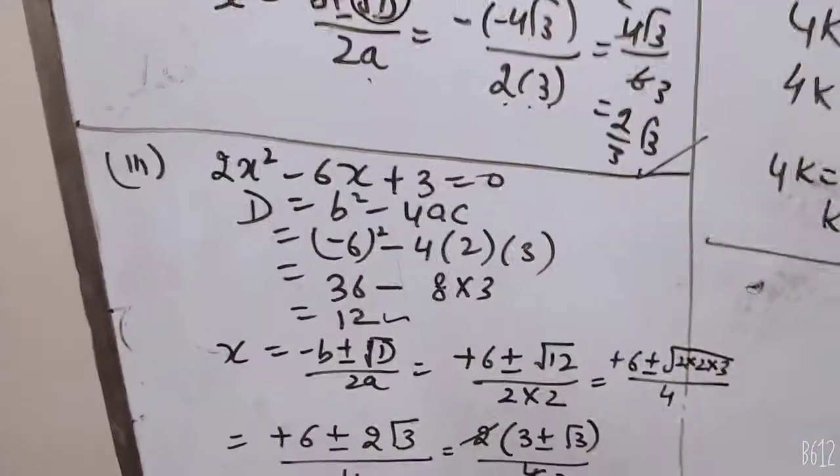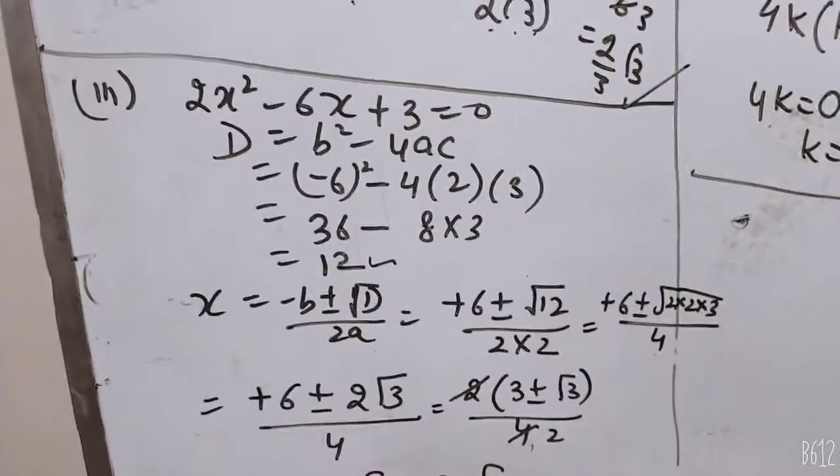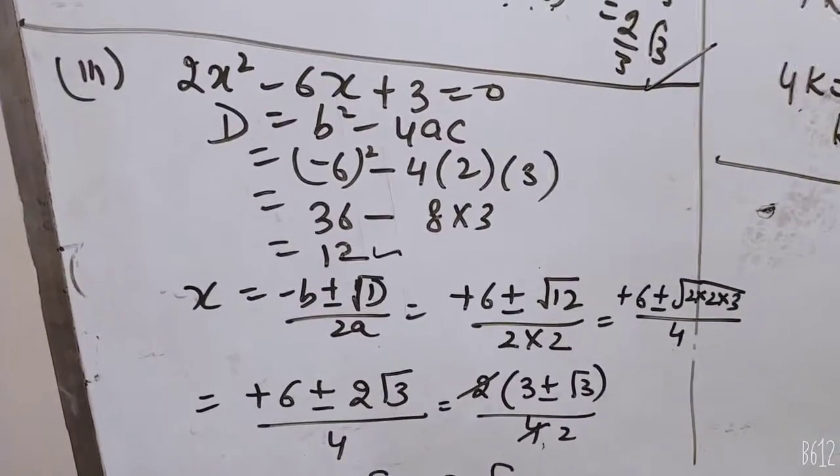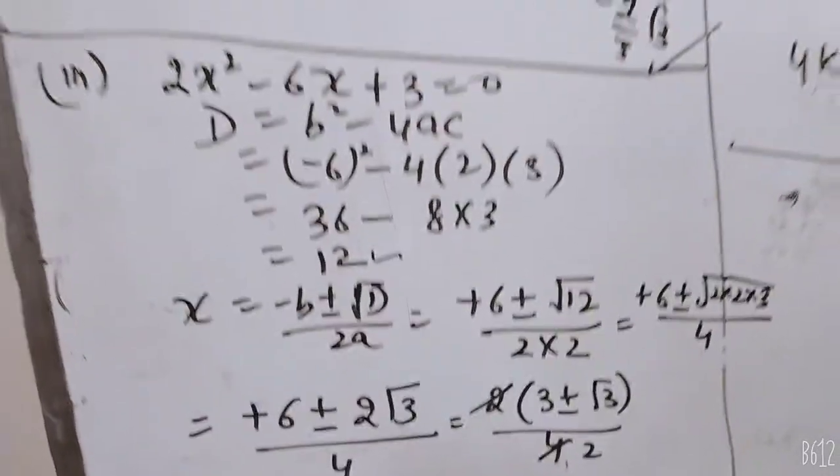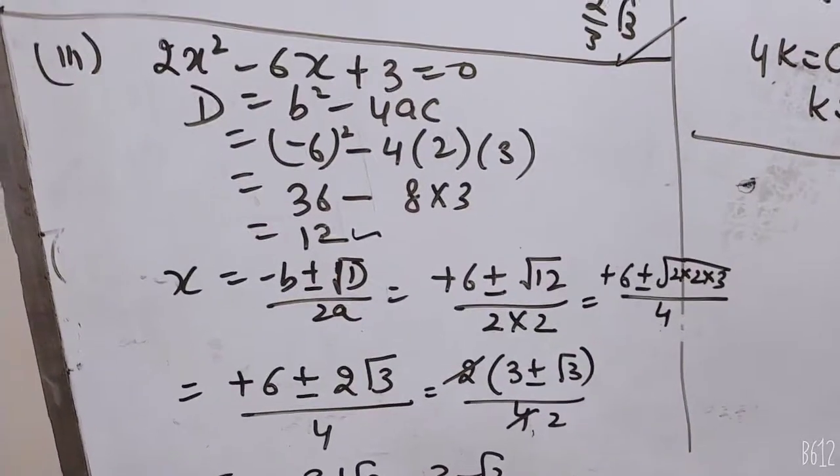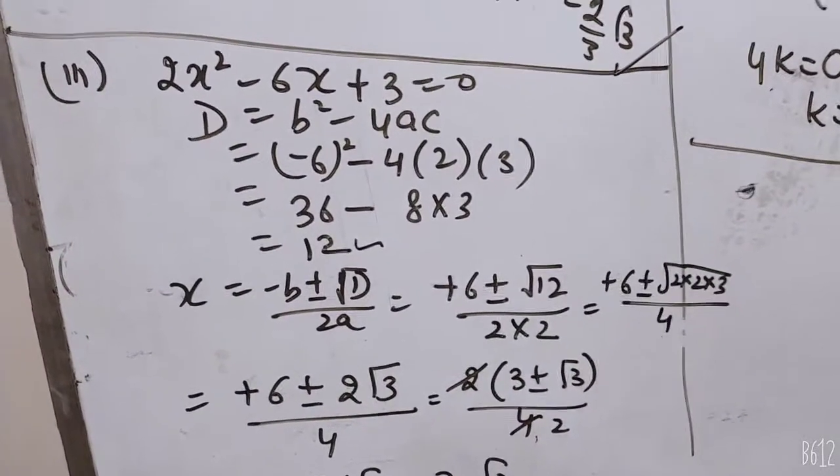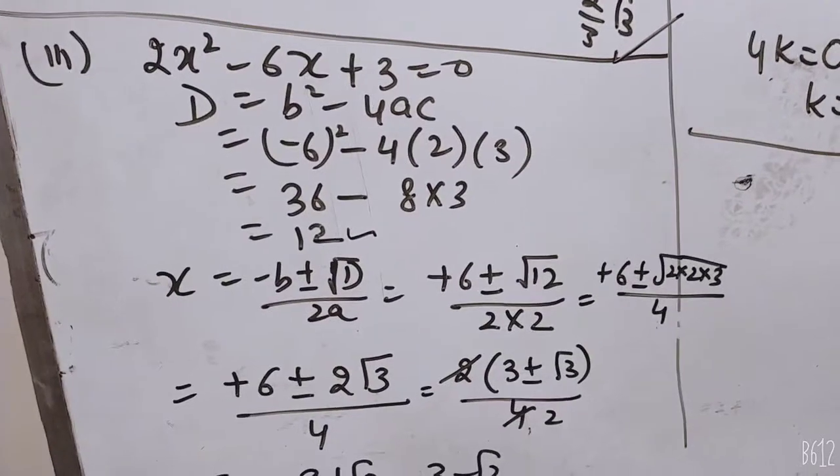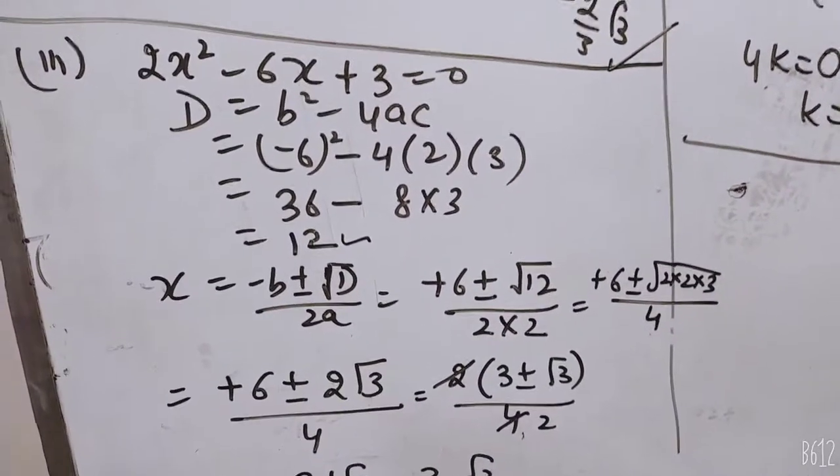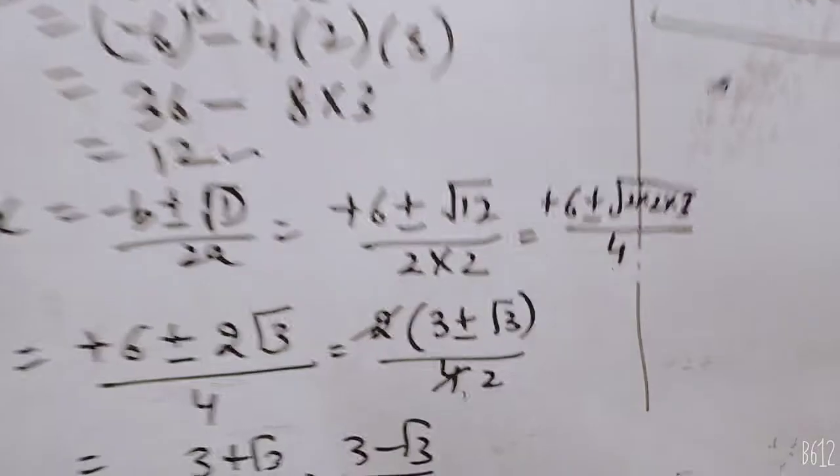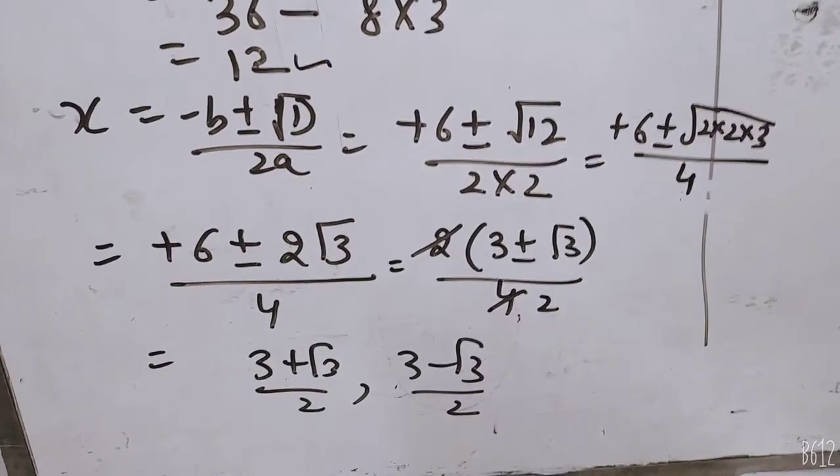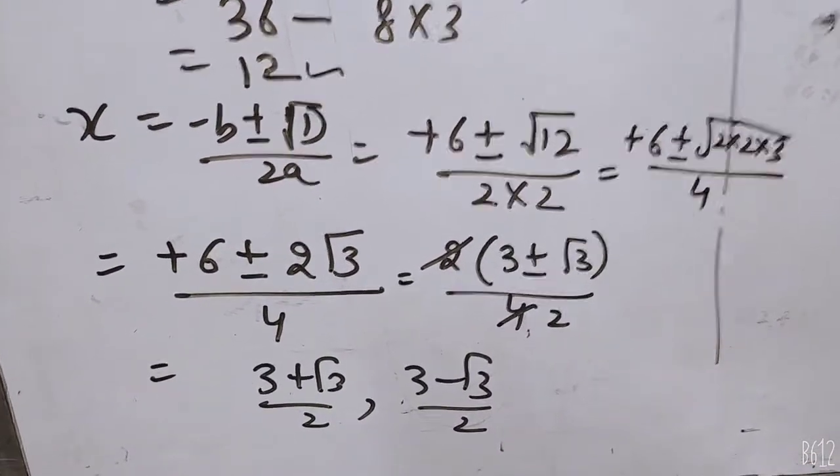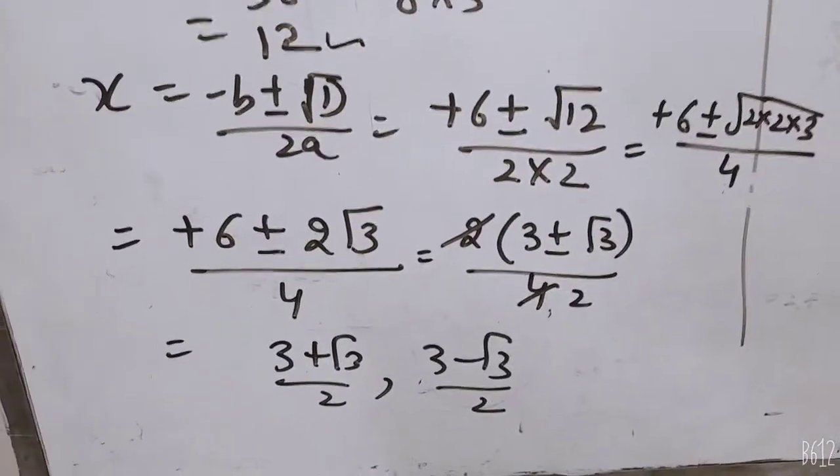Next part, 2x squared minus 6x plus 3. D value is minus 6 squared minus 4 into 2 into 3, which gives 12. Then use the formula minus b plus minus root D by 2a. Root 12 is D, so 6 plus minus 2 root 3 upon 4. Taking 2 common, we get 3 plus root 3 by 2 and 3 minus root 3 by 2.